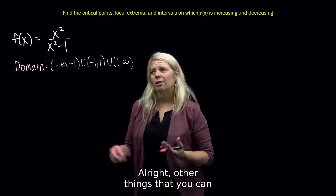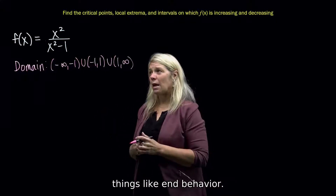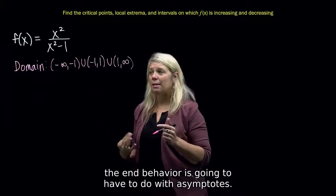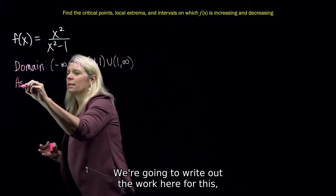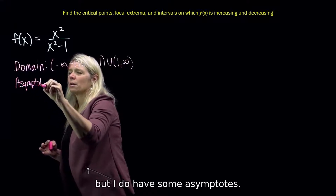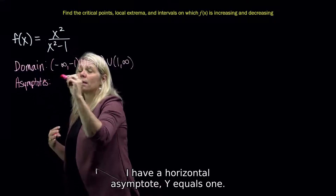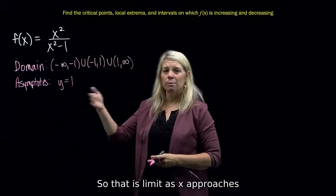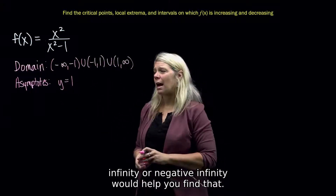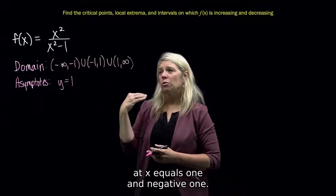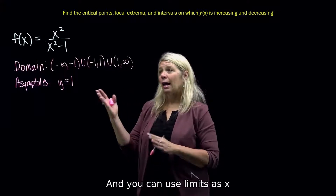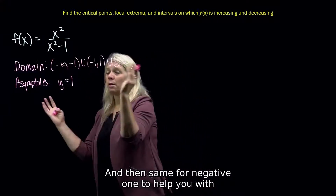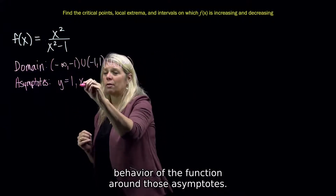Other things that you can tell from the original function are things like end behavior. Because this is a rational function, end behavior is going to have to do with asymptotes. I have a horizontal asymptote y equals 1 — the limit as x approaches infinity or negative infinity would help you find that. I also have vertical asymptotes at x equals 1 and negative 1, and you can use limits as x approaches 1 from the left and right, and same for negative 1, to help with behavior around those asymptotes.